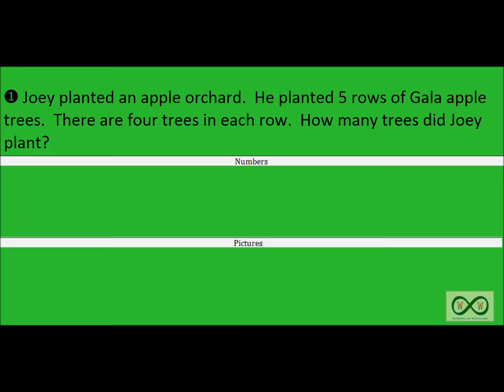Joey planted an apple orchard. He planted five rows of gala apple trees. There are four trees in each row. How many trees did Joey plant? So let's take a look through this sentence by sentence, and we'll see if we can tease out our math clues and find our math job.